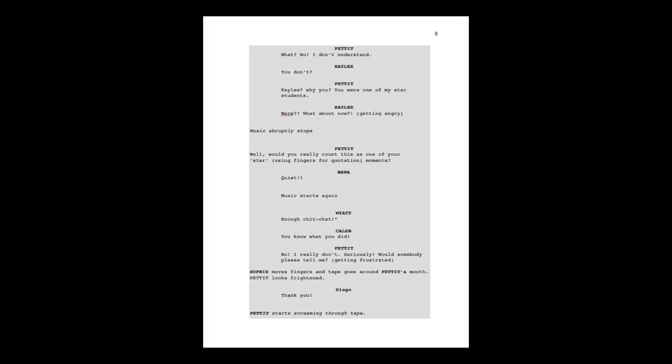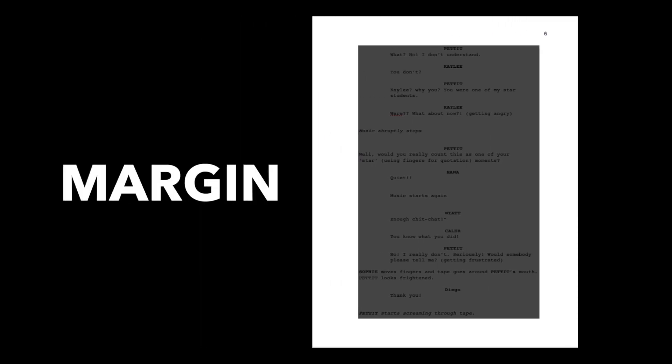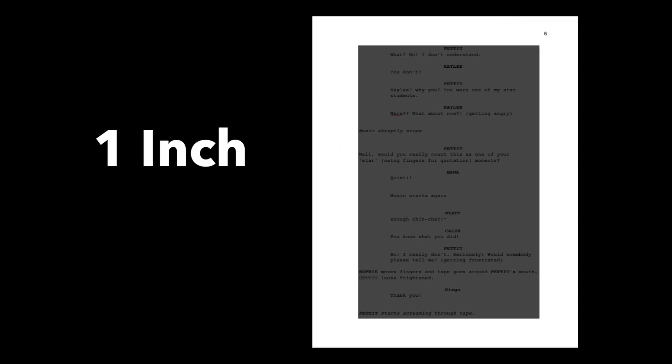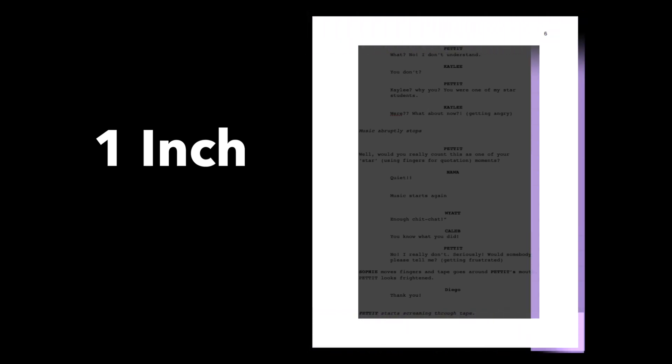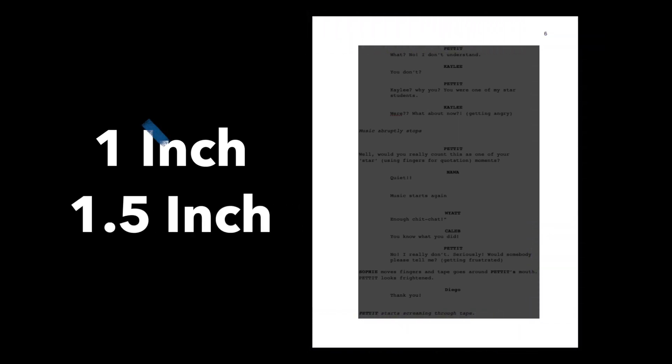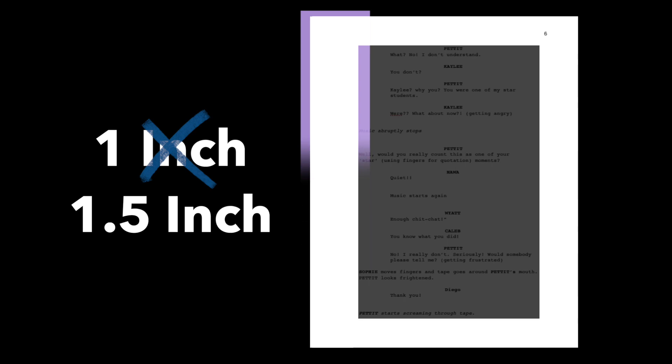Margins. Your document's margin is the white space around the text. You have space above, below, and on either side of your text. This is the margin. For a screenplay, your document should have one-inch margins on the top, bottom, and right, but a 1.5-inch margin on the left.